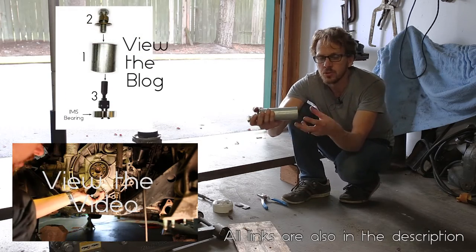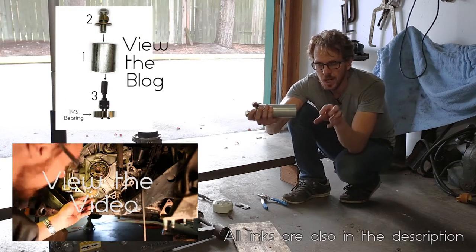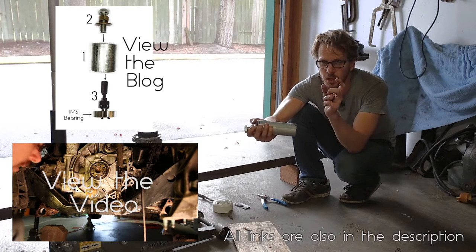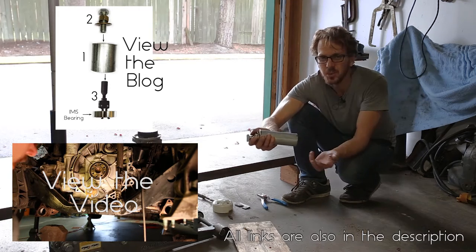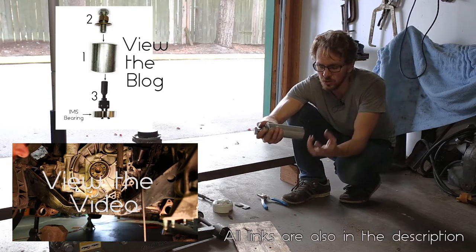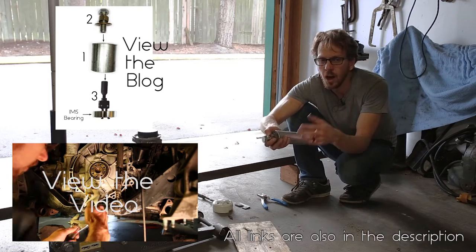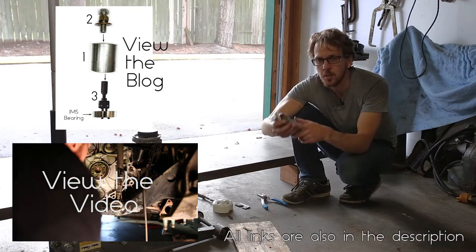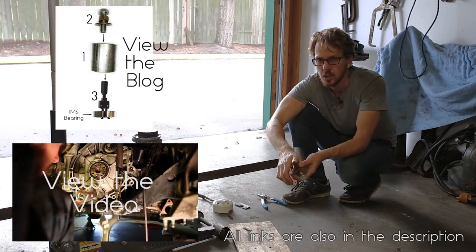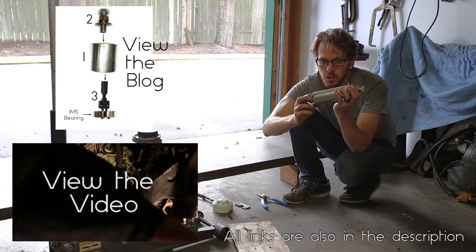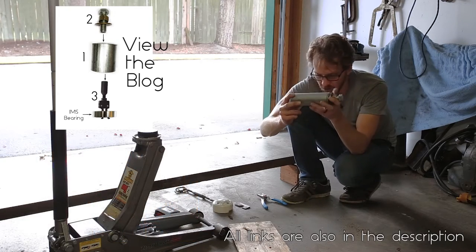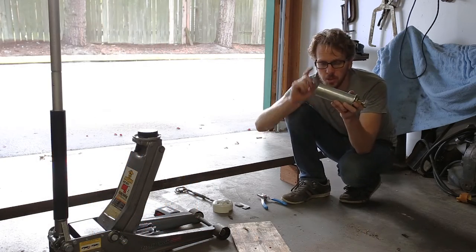This pulls the bearing out by actually grabbing hold of the bearing instead of grabbing hold of the center bolt. I believe the Allen engineering tool actually grabs hold of the center bolt and that's what I tried to do first. I don't think it's a very good system. Pilot bearing puller is definitely the way to go. So this worked really well once I got it all sorted. The dimensions and details for that are, again, up on the blog.